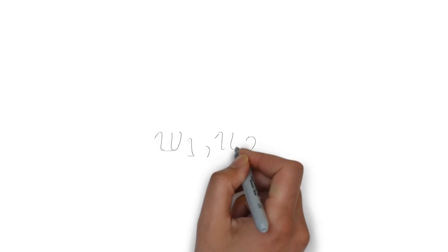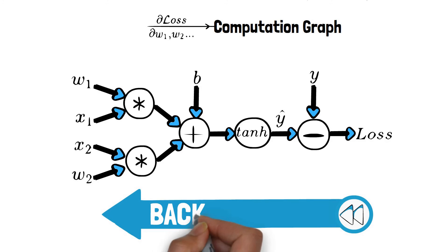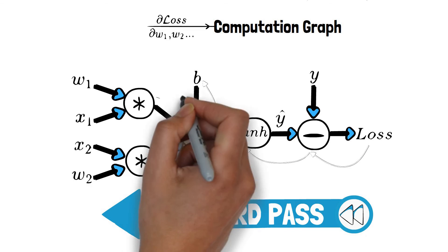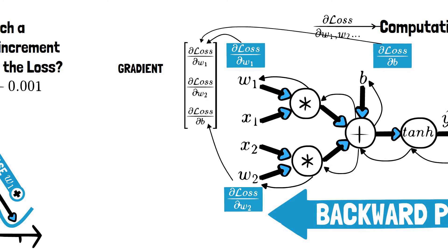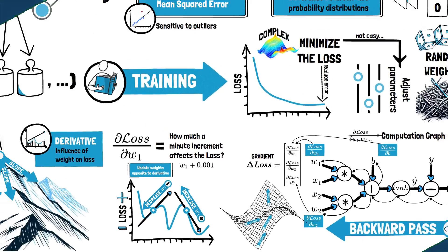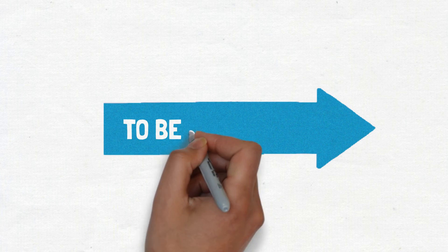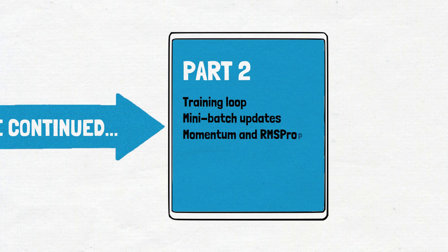To compute the derivative of the loss with respect to each weight, we need to build a computation graph, keeping track of all the operations performed in the forward pass. Then, in the so-called backward pass, we can apply the calculus chain rule to compute the derivatives of the loss with respect to each parameter. All of these derivatives together form the gradient, which is a vector that points in the direction in which the loss function increases the most. Now that we understand what the gradient of the loss means, we can take a look at a typical training loop for a neural network using gradient descent.